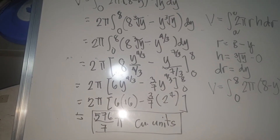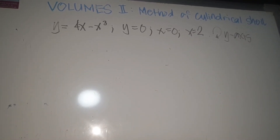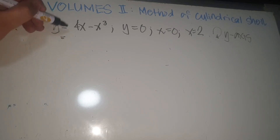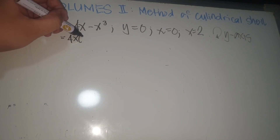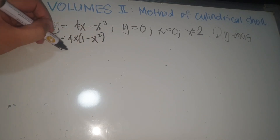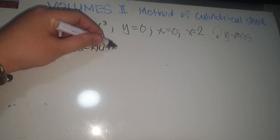For example number 2: find the volume of the figure bounded by y = 4x − x³, y = 0, x = 0, x = 2, rotated about the y-axis. Factoring the curve: y = x(4 − x²) = 4x(1 − x)(1 + x). So there are three roots: x = 0, x = −1, x = 1.